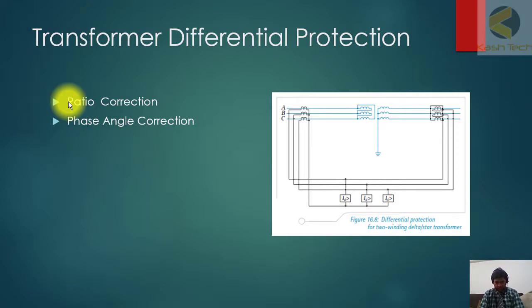Transformer differential protection requires two things: one is ratio correction, another is phase correction. For example, you have a transformer 10:1 ratio. In rough language, if there is one ampere current here, then 10 ampere current will be on the low voltage side. The voltage is decreasing 10 times, so current will increase 10 times, so you have to compensate.